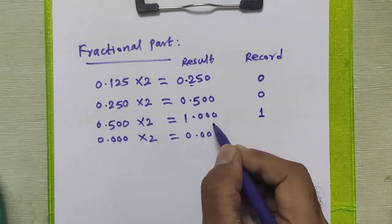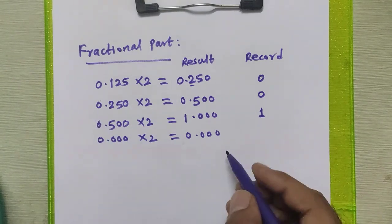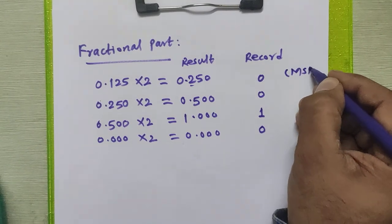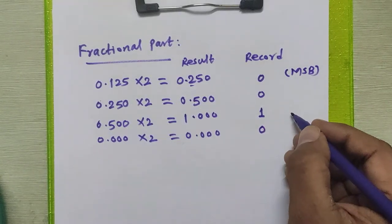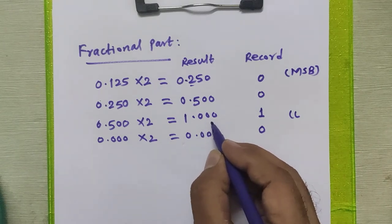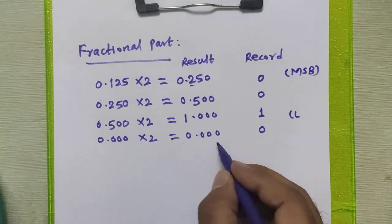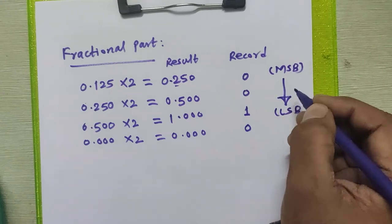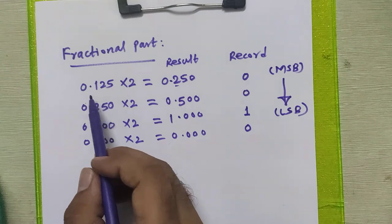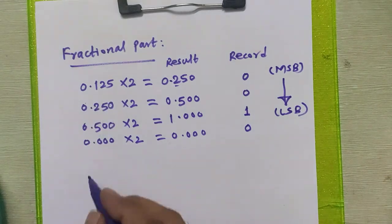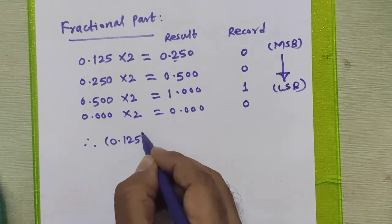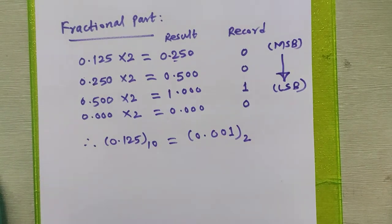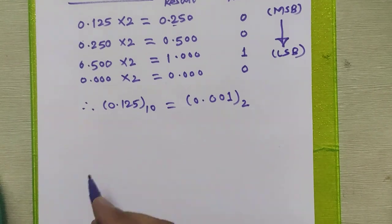Since we got fractional part 0.000, we stop the multiplication process here. The MSB bit is the first bit we recorded and the LSB bit is the last. We read from top to bottom to obtain the binary equivalent. Therefore, 0.125 decimal is equivalent to 0.001 in binary.